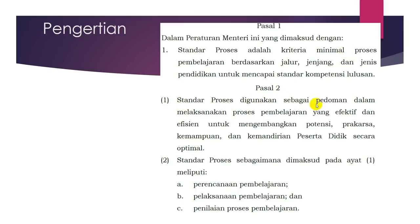Standar proses Pasal 2 digunakan sebagai pedoman dalam melaksanakan proses pembelajaran yang efektif dan efisien untuk mengembangkan potensi, prakarsa, kemampuan, dan kemandirian peserta didik secara optimal. Jadi digunakan sebagai pedoman, sebagai acuan. Kita melaksanakan pembelajaran mulai dari perencanaan sampai dengan evaluasi tidak boleh menyimpang dari standar proses yang sudah ditetapkan. Di ayat 2 Pasal 2 ini, standar proses meliputi tiga hal: perencanaan pembelajaran, pelaksanaan pembelajaran, dan penilaian pembelajaran.